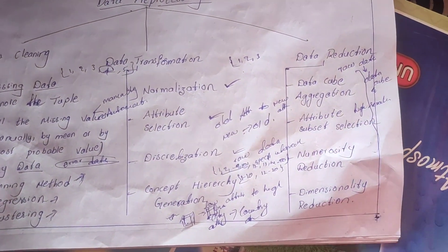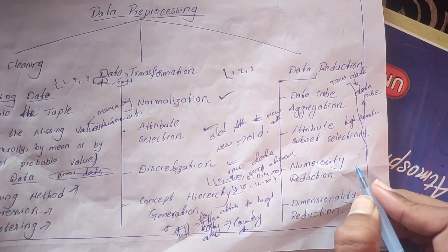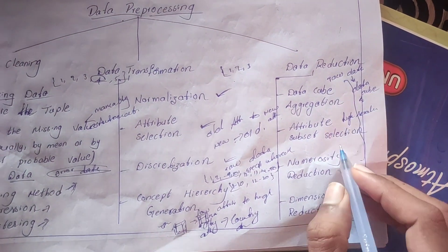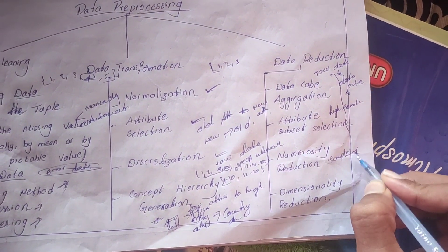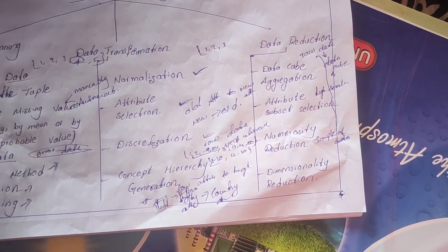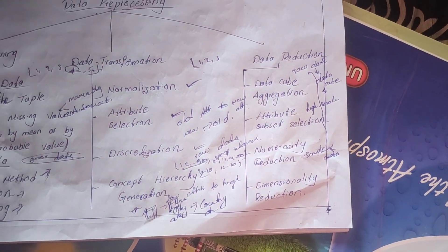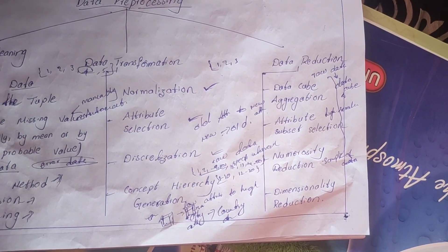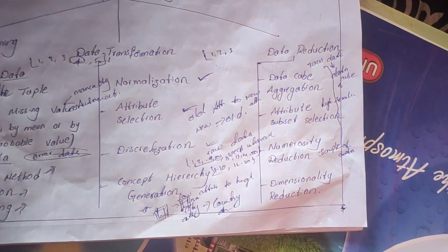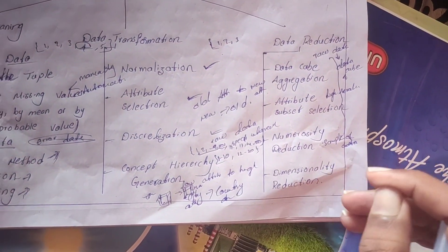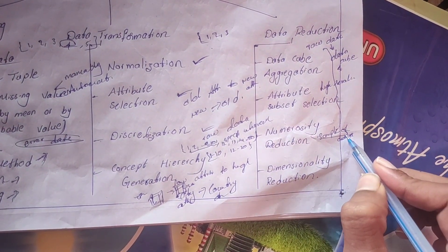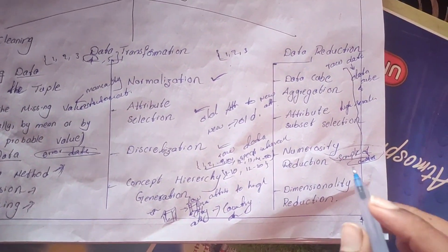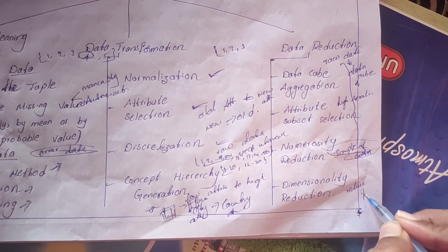In numerosity reduction, a sample of data is stored for future purposes. For example, if a class contains 60 records, we store only 6 or 7 representative records for future reference. This sample of data is stored for future use.